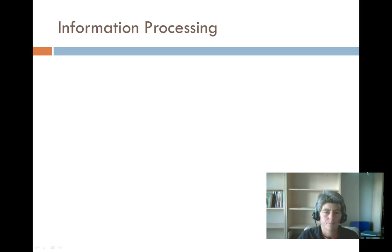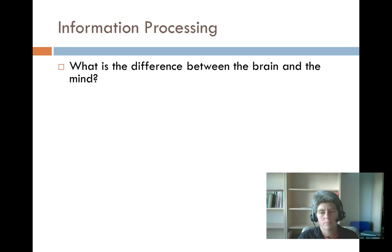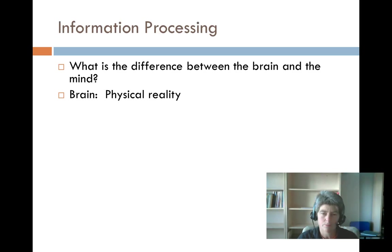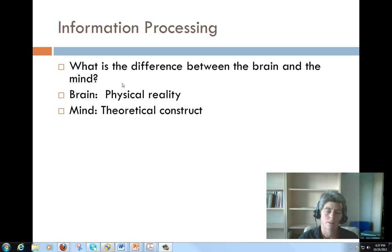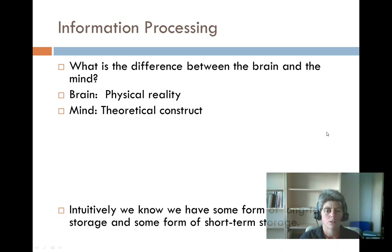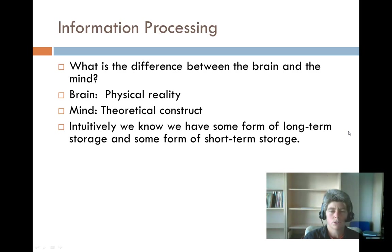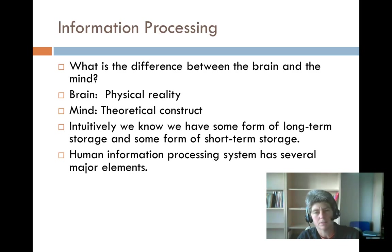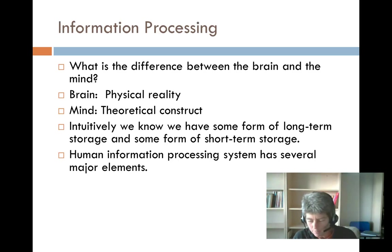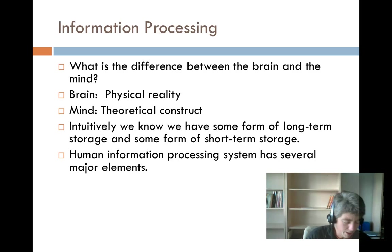When we think about information processing, a question comes to mind about the difference between your brain and your mind. Your brain is an actual physical mass in your head, and your mind is a theoretical construct. We all know we have some form of long-term storage and some form of short-term storage. The human information processing system is super complicated and has some major elements — you read about those — and hopefully you were as fascinated as I was about making meaningful encoding and making connections between short-term and long-term memory.